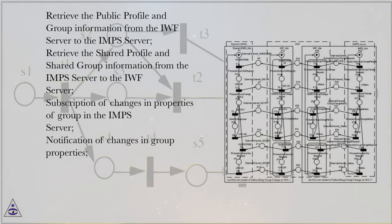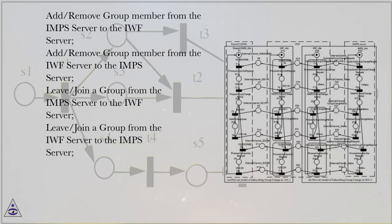Besides, the functions of the IWF1 reference point should be enhanced: subscription of changes in state of group from the shared XDMS to the IWF, and notification of changes in state of group from the IWF to the shared XDMS. The functions of the IWF3 reference point should also be enhanced: retrieve the public profile and group information from the IWF server to the IMPS server, retrieve the shared profile and shared group information from the IMPS server to the IWF server, subscription of changes in properties of group in the IMPS server, and notification of changes in group properties.